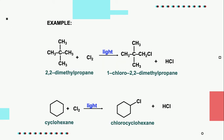In 2,2-dimethylpropane, all hydrogens are primary hydrogens. Likewise, in cyclohexane, all hydrogens are secondary hydrogens.